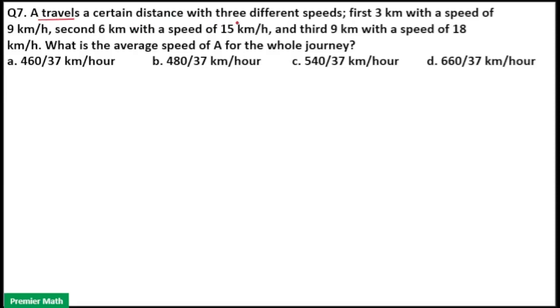A travels a certain distance with three different speeds. First, 3 km with a speed of 9 km per hour. Second, 6 km with a speed of 15 km per hour. Third, 9 km with a speed of 18 km per hour. What is the average speed for the whole journey?